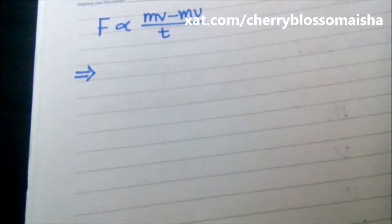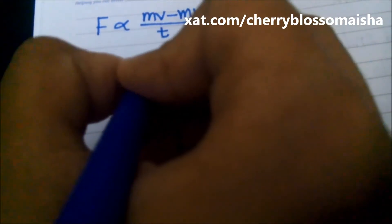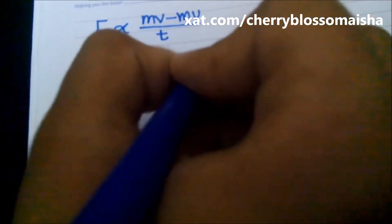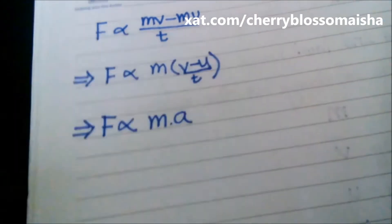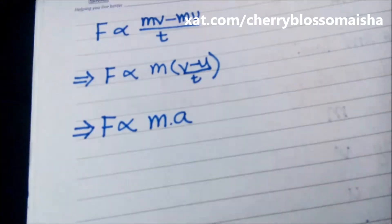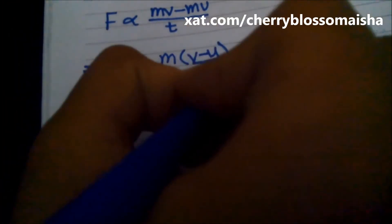Now we get F, that means force is proportional to M into V minus U divided by T. So we can write F is proportional to M into a, where a means acceleration.